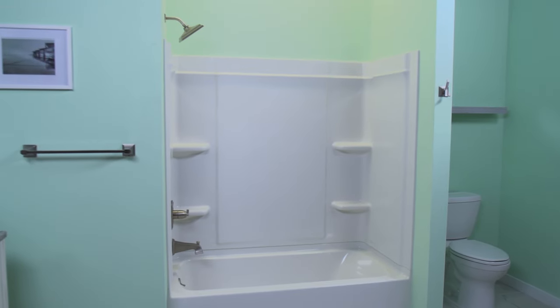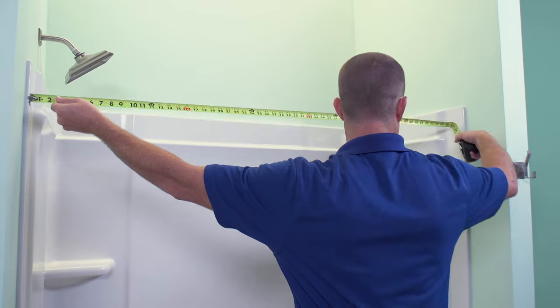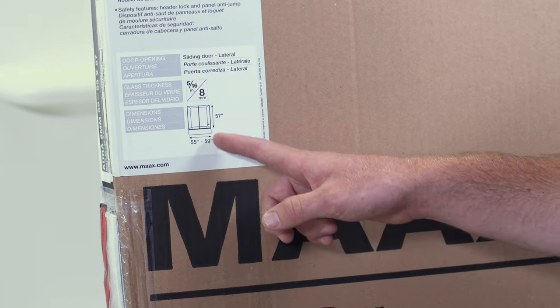Before you begin, make sure the door and panel fit within the tub enclosure. Measure the height and width of the tub enclosure and compare them with those of the door and panel you wish to install.